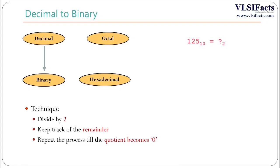Now let us solve one example to understand the process. The decimal number given here is 125, and we will convert this particular decimal number to its equivalent binary form. To perform this, we will keep on dividing 125 by 2 and track the remainders.